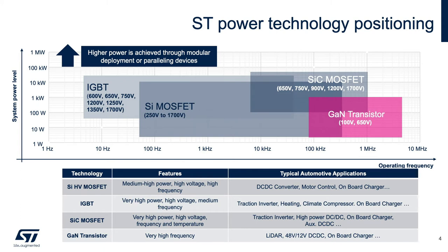On the other hand, gallium nitride technology is suitable for low to medium power applications, and this wide bandgap material is tailored towards very high switching frequency to further achieve high power density in our converters.